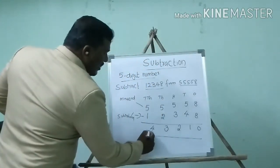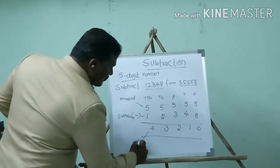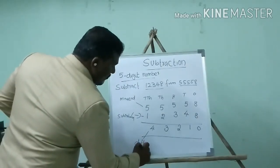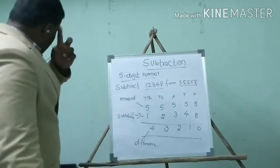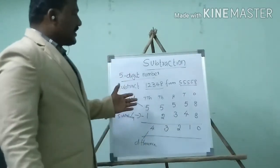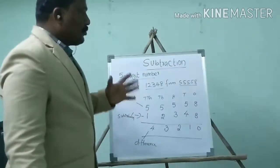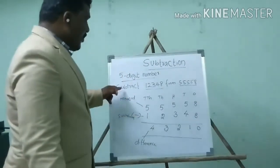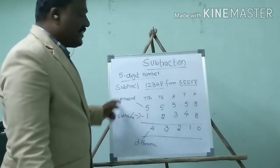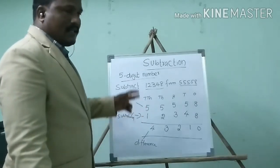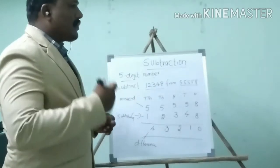What we call the answer is difference. It is very important — when you do this subtraction calculation, you have to mention: it is a minuend, it is a subtrahend, it is a difference. When you repeatedly write these property names, you can easily memorize them.